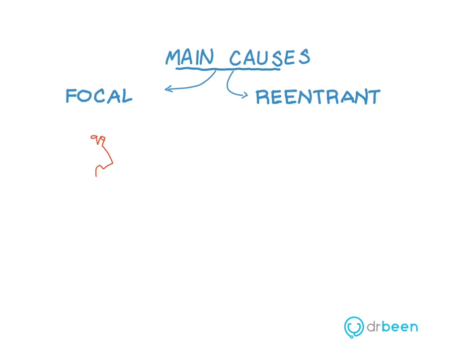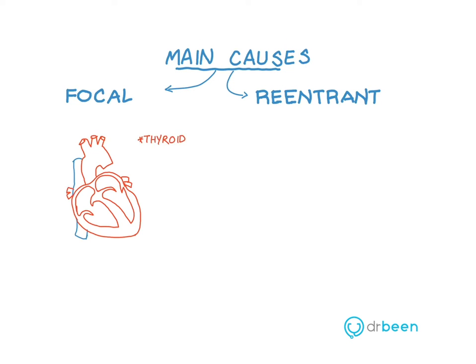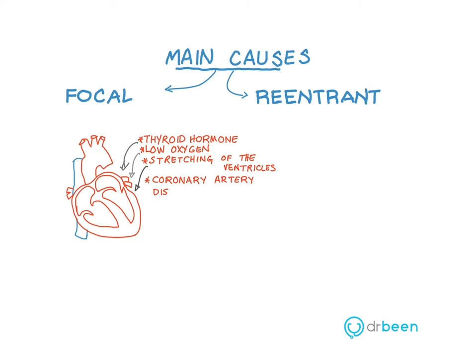There are two main causes of VTAC, which include focal and re-entrant. Focal can be caused by hormones such as thyroid hormones, low oxygen, stretching of the ventricles, and cardiac diseases such as coronary artery disease, which causes irritation to the myocardial cells.